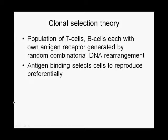Every person, and indeed every vertebrate animal, is born with a population of T cells and B cells — we call these lymphocytes — each of which has its own unique antigen receptor gene generated by random combinatorial DNA rearrangement. Each of these cells expresses on its cell surface its own antibody or T cell receptor. In their naive state, meaning they haven't ever seen an antigen before, they do nothing. They just hang out in the body in lymph nodes, skin, or the intestinal epithelium, waiting for antigens to come along.